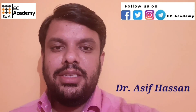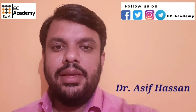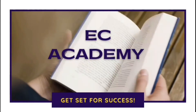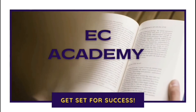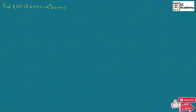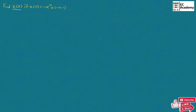Hello friends, welcome to ESEA Academy. In this lecture, let us understand a problem on Z-transform. Here, we need to find X of Z, which means the Z-transform, if X of N is equal to minus alpha to the power of N, U of minus N minus 1.